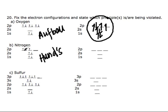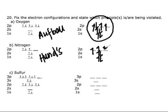Let's correct this mistake. Counting the electrons: we have 7 total. Starting from the lowest energy level — 1s gets 2, 2s gets 2. Now we distribute the remaining 3 electrons evenly between the 2p orbitals, placing one in each orbital before pairing. So this is the correct electron configuration for nitrogen.